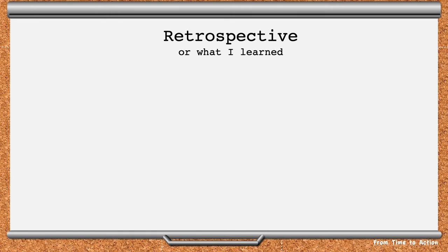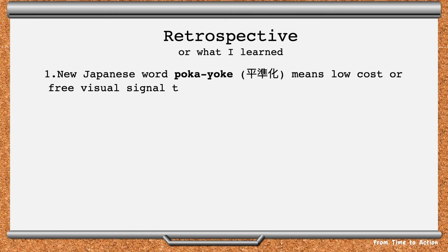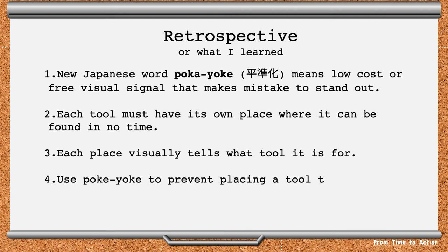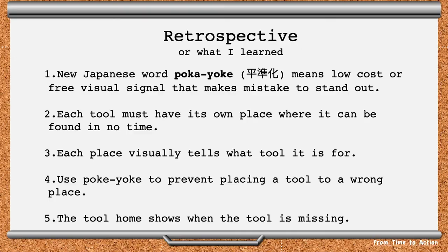And now it's time for the retrospective or to remind ourselves what we learned. We learned a new Japanese word poka-yoke, which means low-cost or free visual signal that makes mistakes stand out. Each tool must have its own place where it can be found in no time. Each place visually tells what tool it is for. Use poka-yoke to prevent placing a tool in the wrong place. And the tool home shows when the tool is missing.